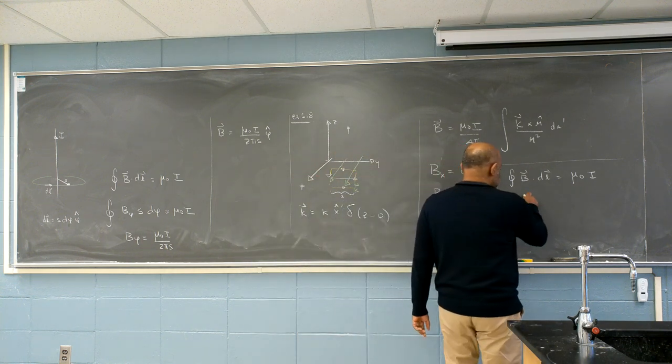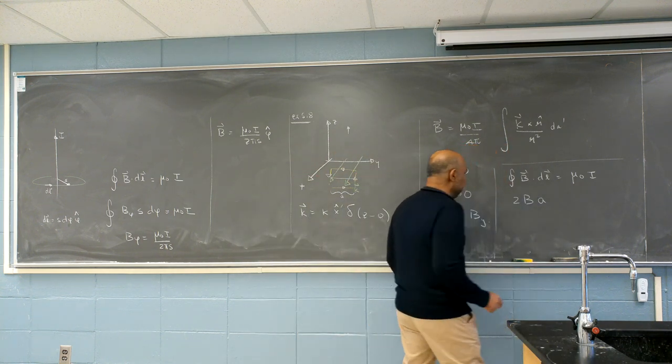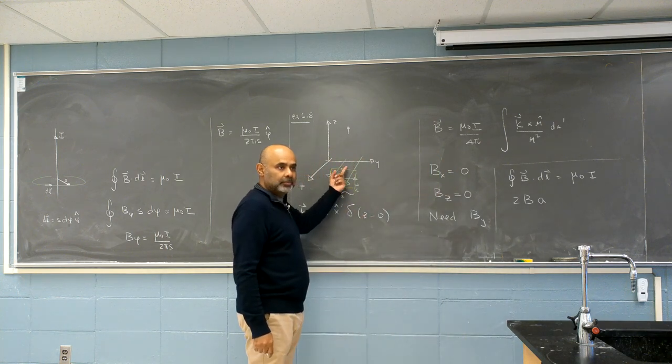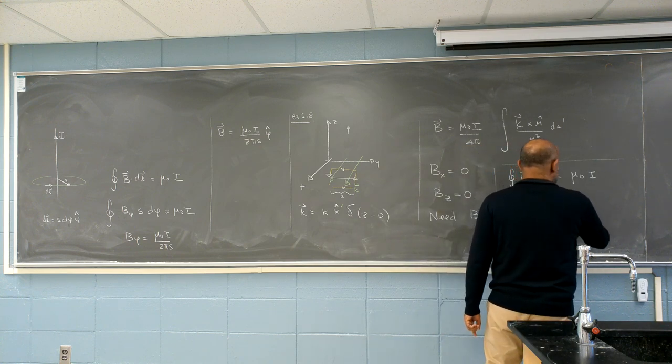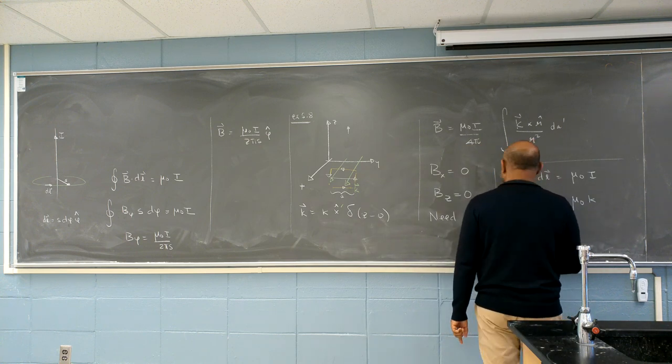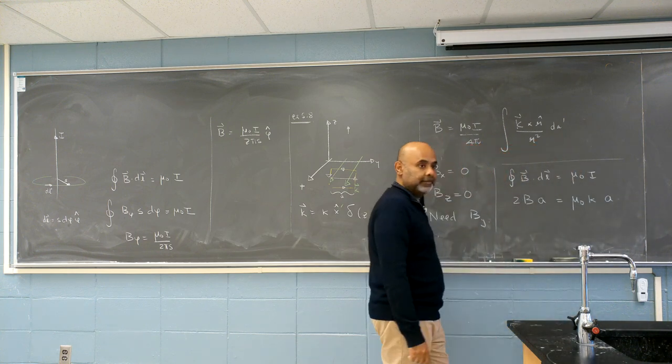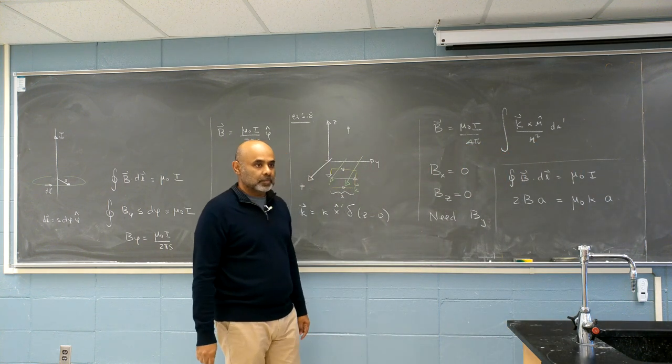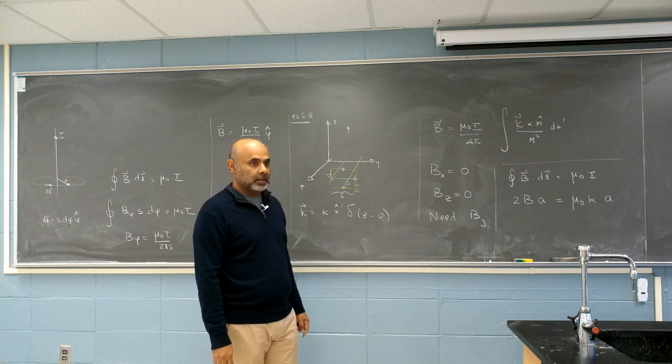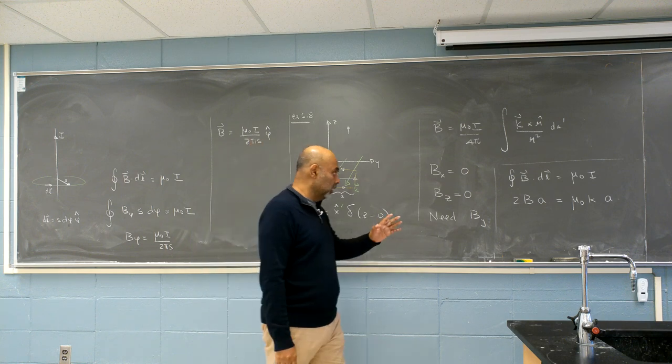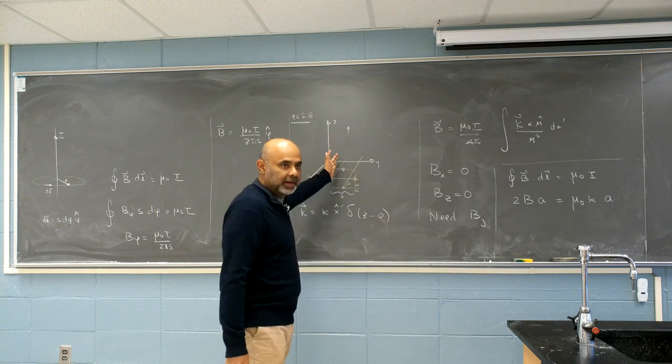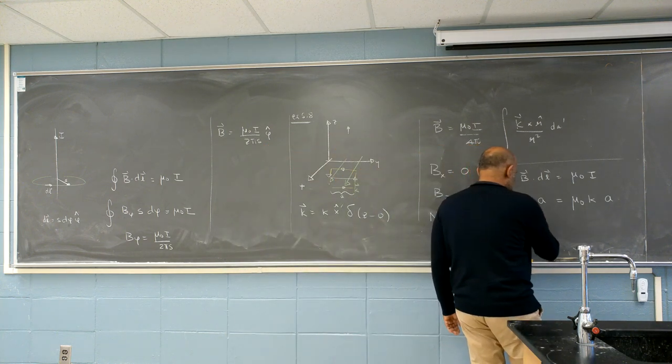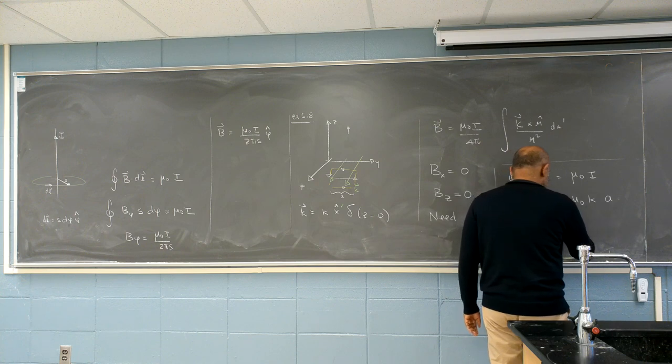So then I get B times two times B times A. The length of the loop. B times A? B times A. Equals mu zero K times A. A goes away because we picked an arbitrary loop of length A. It shouldn't depend on A. And so I get B. And here there's some effort. So mu zero K over two.